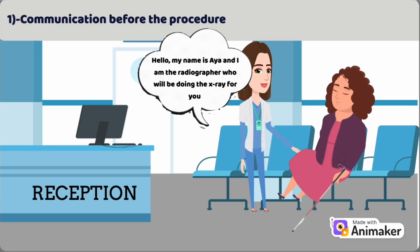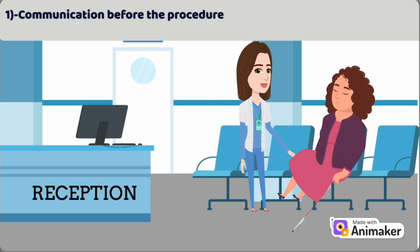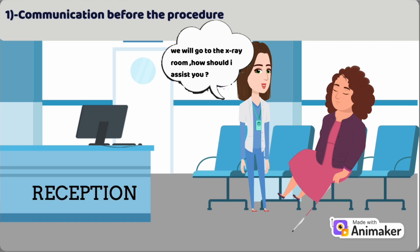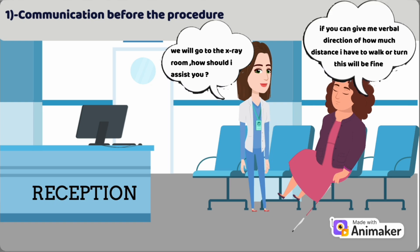When communicating with the patient before the procedure, always introduce yourself using clear, simple language. For example, say: 'Hello, my name is Aya, and I am the radiographer who will be doing the x-ray for you.' When guiding a visually impaired patient, ask how they want to be assisted and describe the surroundings, such as any steps or obstacles. Remember to ask for their preferences on touch. For example, say: 'We will go to the x-ray room — how should I assist you?' The patient may respond: 'If you can give me verbal directions of how much distance I have to walk or turn, that will be fine.'